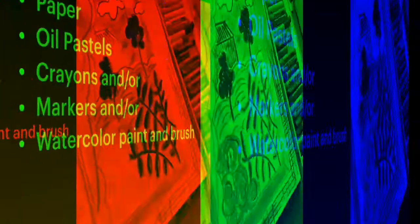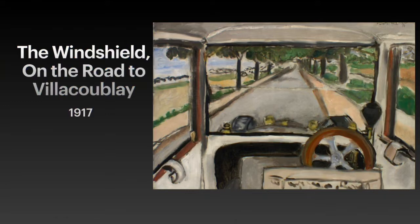Here is an example of painting what is right in front of you. For Henry Matisse, that was the view from inside a car. This painting is at the Cleveland Museum of Art. Matisse's son was driving him to the airport when Matisse decided to paint the road — I hope his paint didn't spill everywhere!